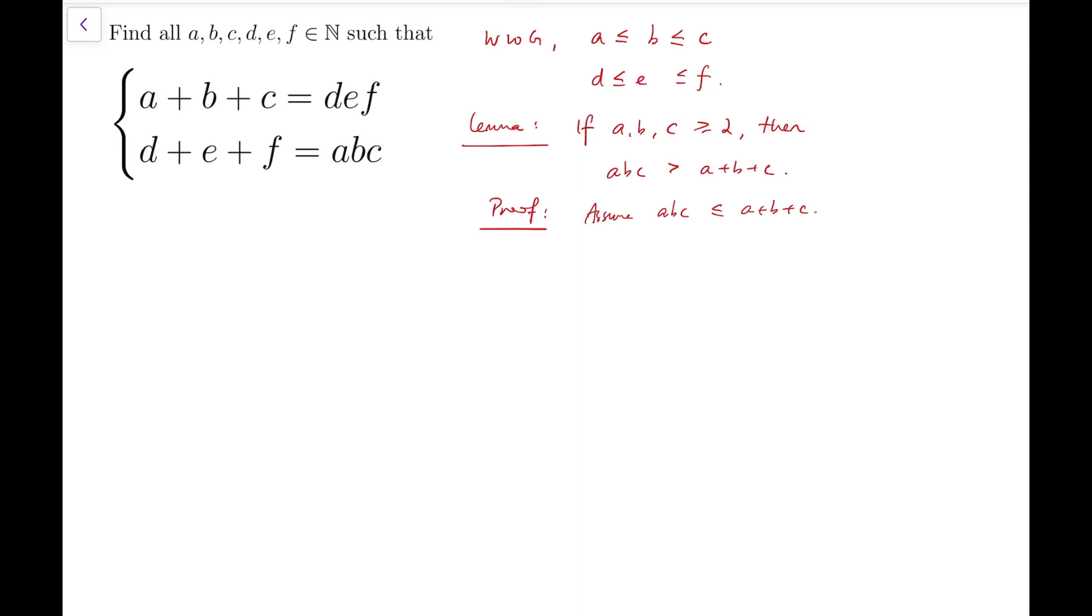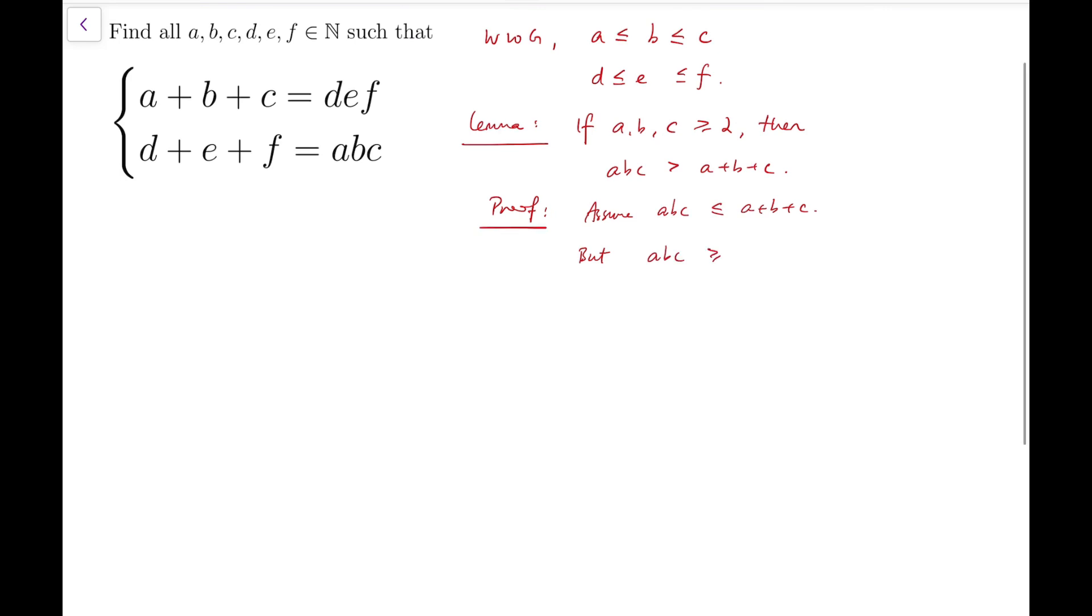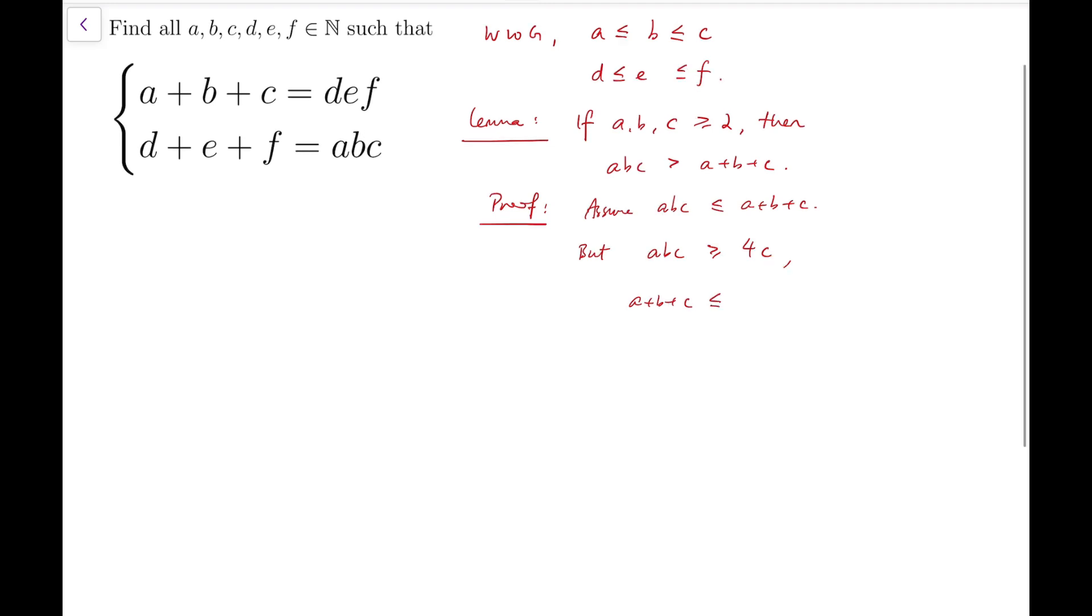So we know that abc is at least four c, because a and b are at least two, so the product is at least four. And also, the sum is at most three c.